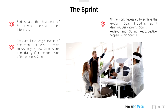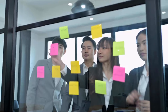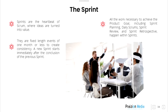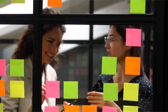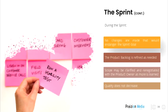The Sprint. Sprints are the heartbeat of Scrum where ideas are turned into value. They are fixed-length events of one month or less to create consistency. A new Sprint starts immediately after the conclusion of the previous Sprint. All the work necessary to achieve the product goal, including Sprint Planning, Daily Scrums, Sprint Review, and Sprint Retrospective, happens within Sprints. During the Sprint, no changes are made that would endanger the Sprint Goal. Quality does not decrease. The product backlog is refined as needed and scope may be clarified and renegotiated with the Product Owner as more is learned.